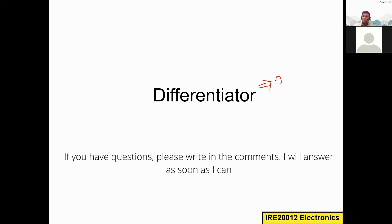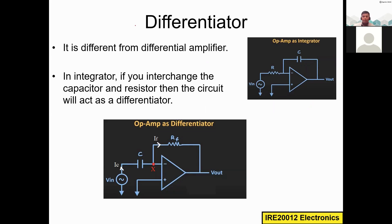This is another application of op amp. As already mentioned, differentiator is different from differential amplifier. Differential amplifier amplifies the voltage difference, but a differentiator differentiates the input voltage. So how can we do the circuit design of a differentiator?